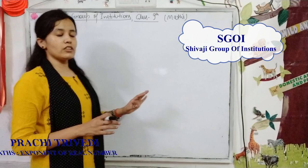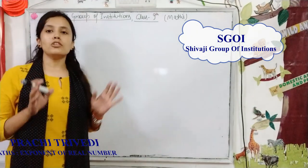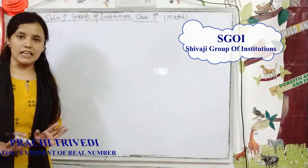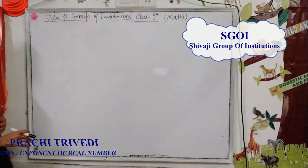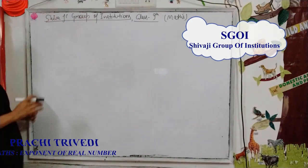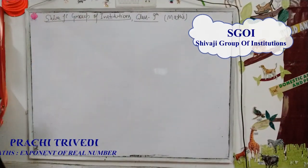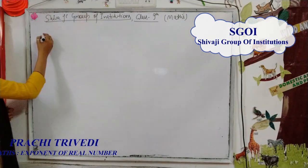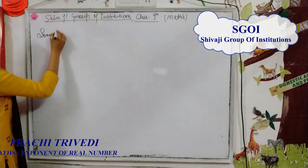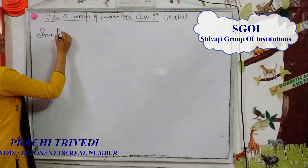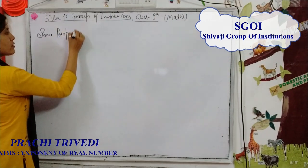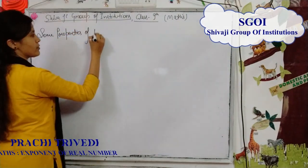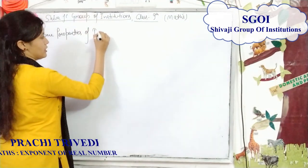As we know that all non-terminating, non-repeating numbers are irrational. But here we will discuss some other properties of irrational numbers.